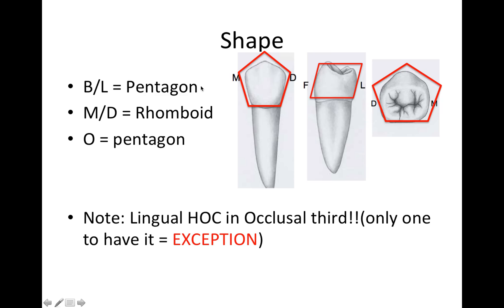On to the mandibular second premolar. The shape from the buccal-lingual view is going to be a pentagon. From mesial-distal, we've got a rhomboid. From an occlusal view, it's also going to be a pentagon. Note that the lingual height of contour is in the occlusal third — this is the only tooth to have its lingual HOC in the occlusal third.